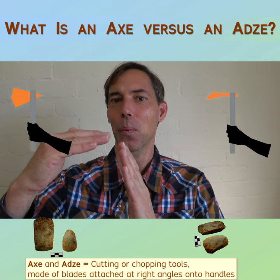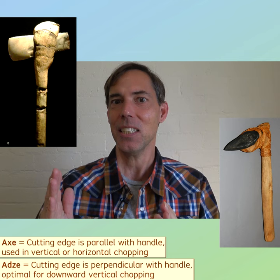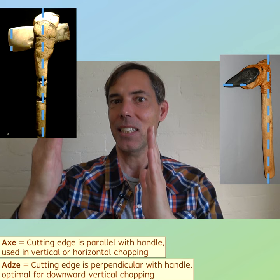With an axe blade, the cutting edge is aligned parallel with the handle. With an adze blade, the cutting edge is aligned perpendicular with the handle.